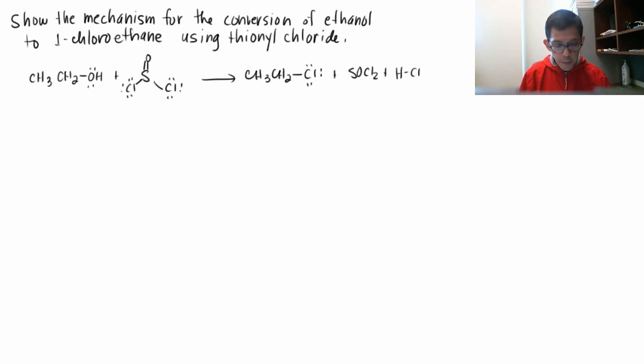Show the mechanism for the conversion of ethanol to 1-chloroethane using thionyl chloride. So thionyl chloride is SOCl2.